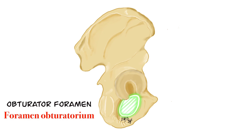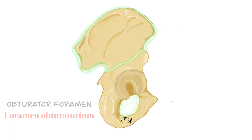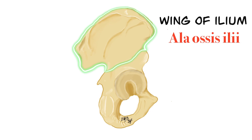The wing part is called the wing of the ilium, or ala osis ilii in Latin. This part resembles a fan or wing. Ala means wing, osis means bone, and ilii means ilium. So we can translate this as the wing of the ilium bone. Because of this resemblance, it is named ala osis ilii in Latin.